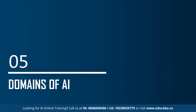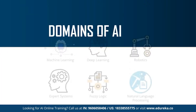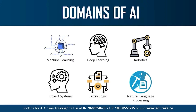Moving on to the last topic of today's session: the different domains or branches of artificial intelligence. Artificial intelligence can be used to solve real-world problems by implementing machine learning, deep learning, natural language processing, robotics, expert systems, and fuzzy logic. Recently, AI has also been used in computer vision and image processing. Let me briefly tell you about each of these domains.